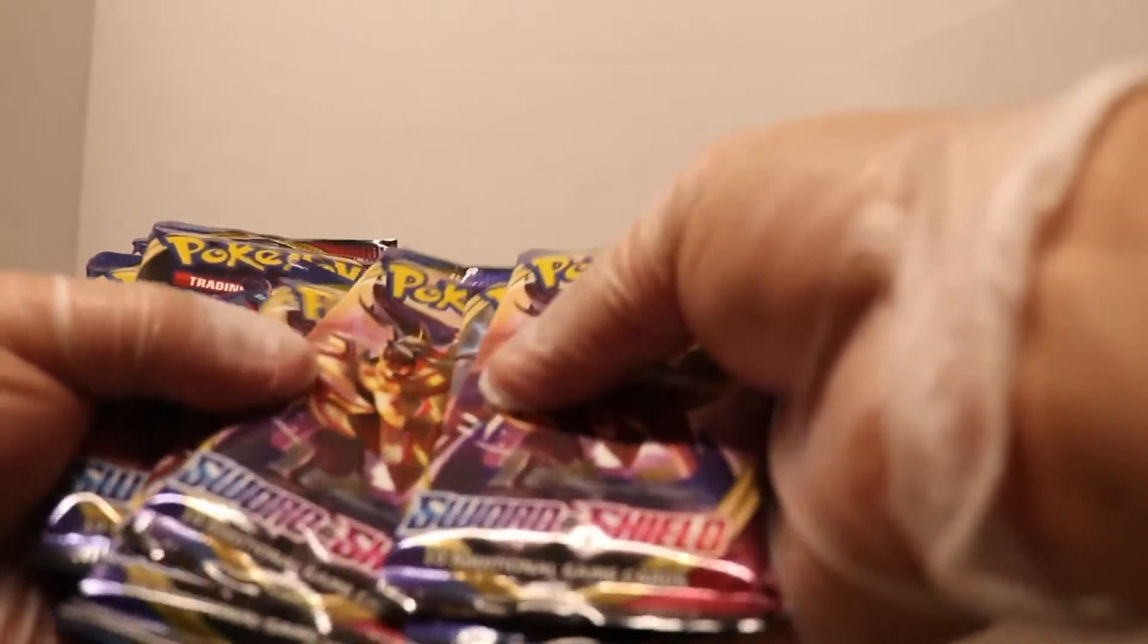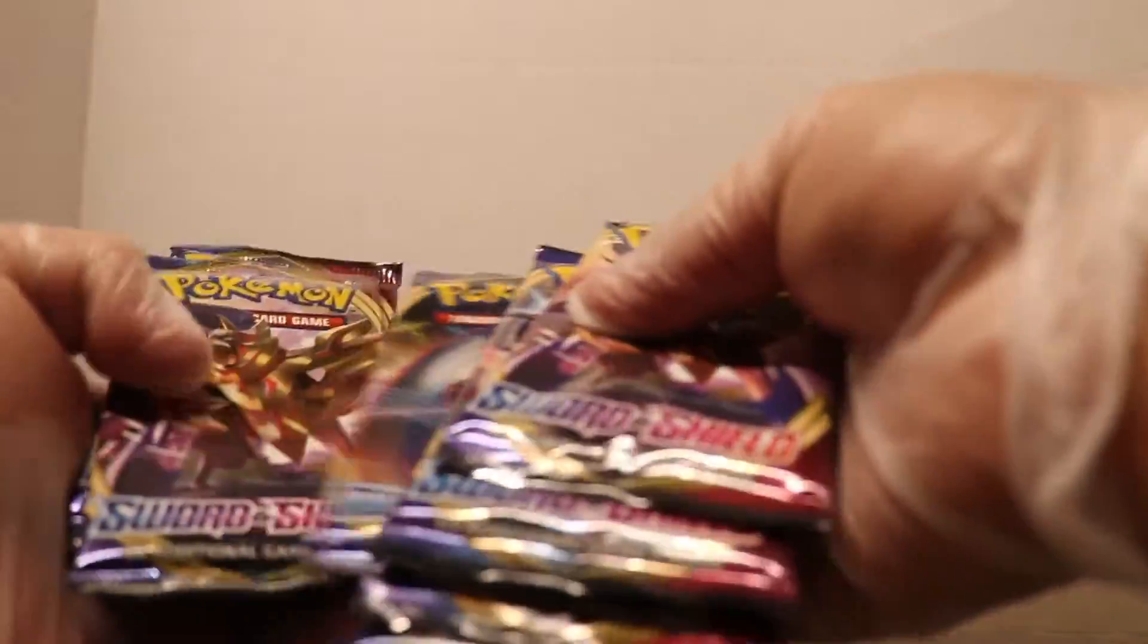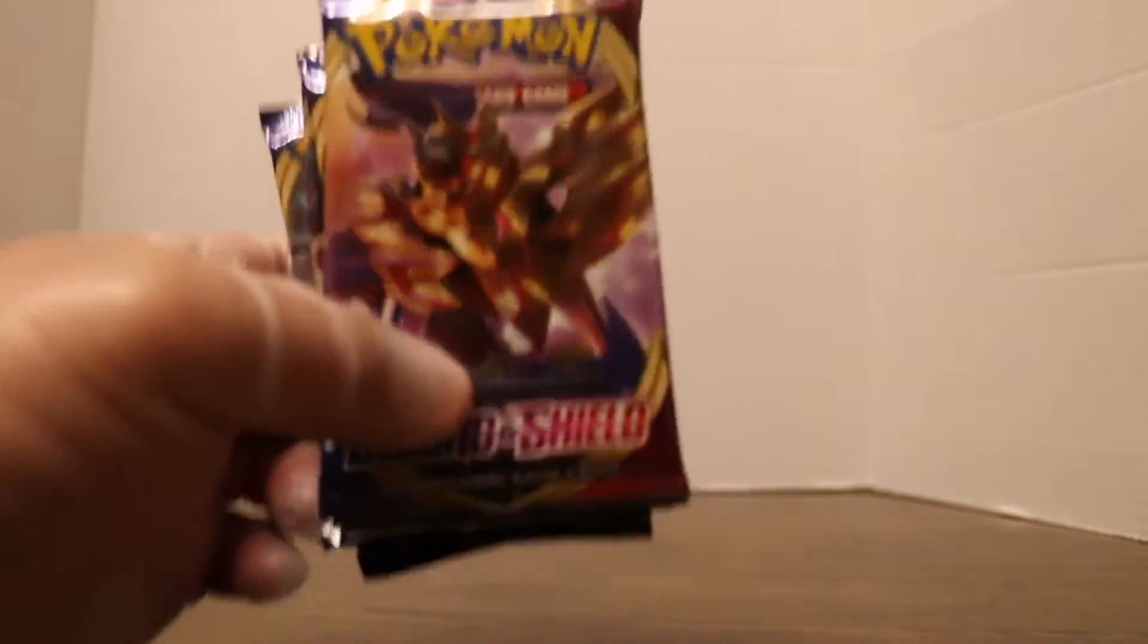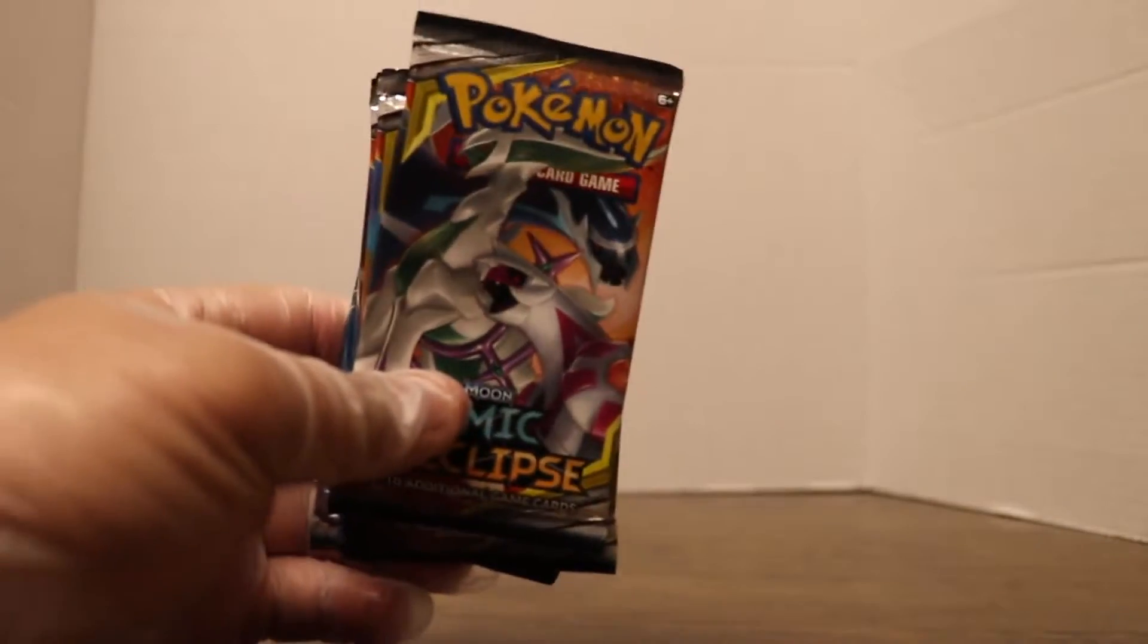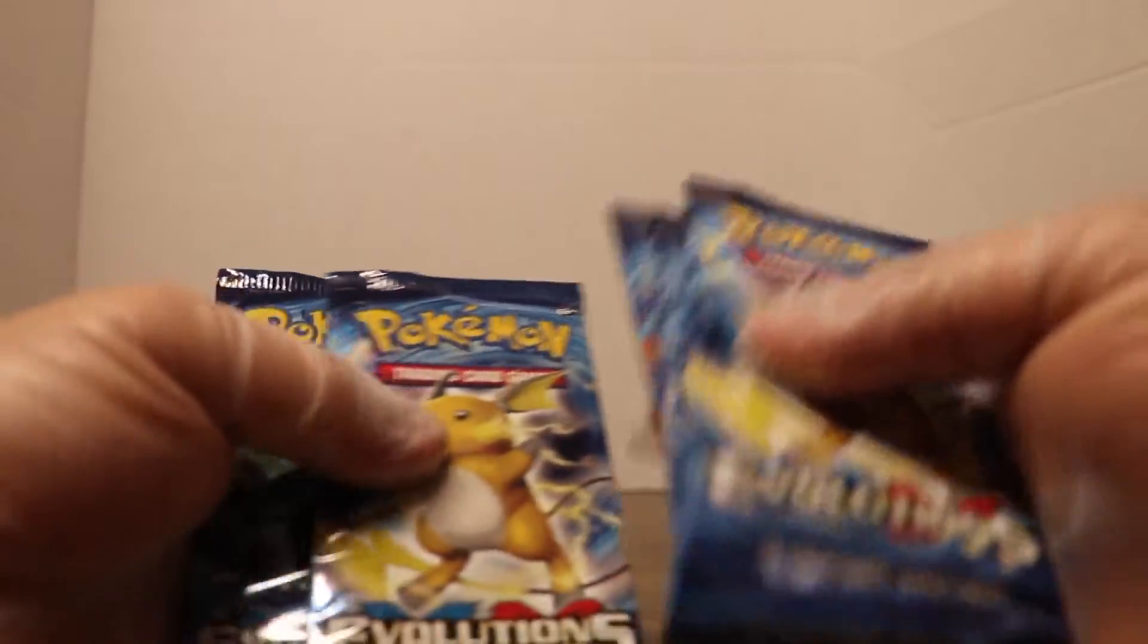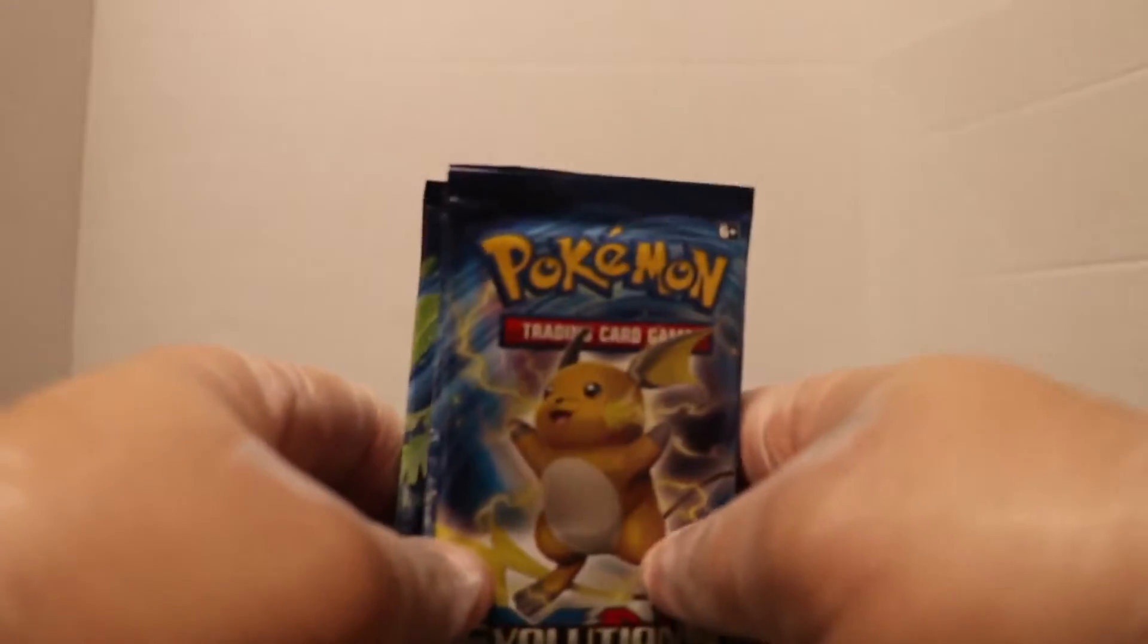Now that that is done, we have our packs here. We have one, two, three, four, five, six, seven, eight, nine, ten total Sword and Shield booster packs. We're only getting into the Sword and Shield booster packs today, but I'm going to show you what else we got in this pack. We got five Cosmic Eclipse as well as five Evolutions packs.